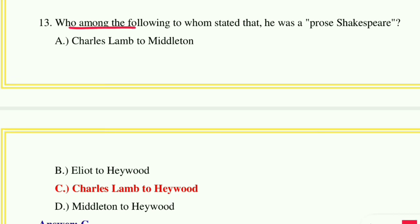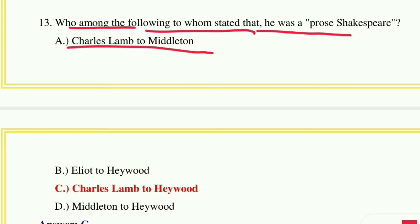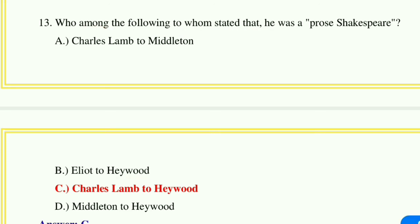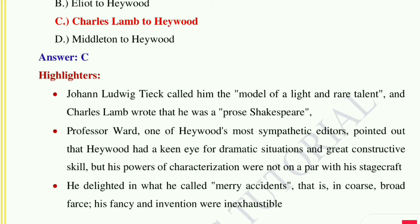Question number thirteen: Who among the following stated that he was 'a prose Shakespeare'? Option A: Charles Lamb to Middleton, option B: Elliot to Heywood, option C: Charles Lamb to Heywood, option D: Middleton to Heywood. The correct answer is option C, Charles Lamb to Heywood. John Lydgate called him 'the model of a light and rare talent,' and Charles Lamb wrote that he was a prose Shakespeare.